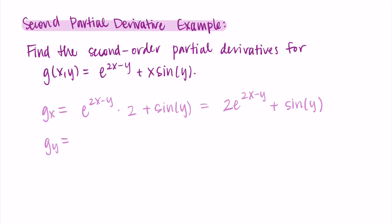I'll write it nicely since I know I'll need to take another derivative. Now repeating this process with respect to y: e to the something times the derivative of the exponent gives a factor of negative 1 from the negative y. Then the derivative of x·sin(y) — here x is the constant and sin(y) is what I'm differentiating — gives x·cos(y). So the partial derivative with respect to y is: -e^(2x - y) + x·cos(y).